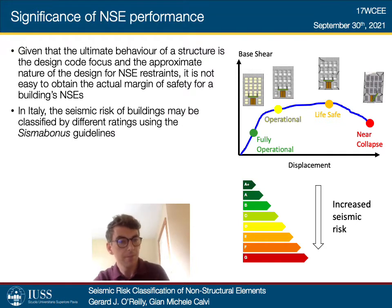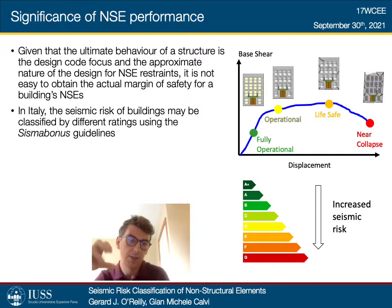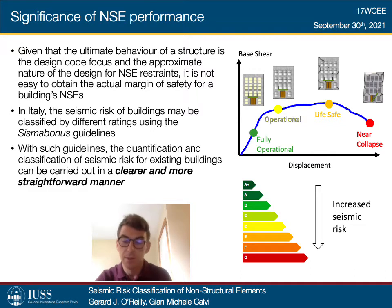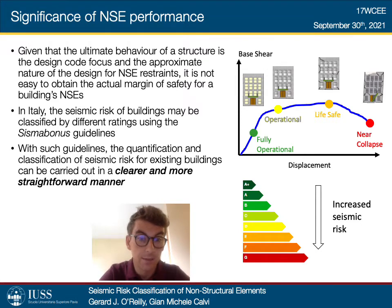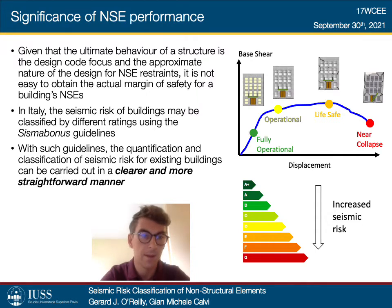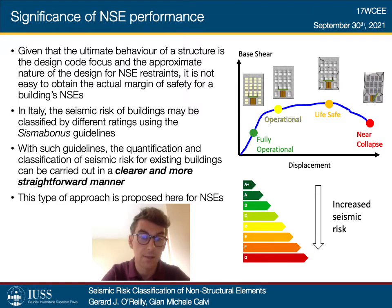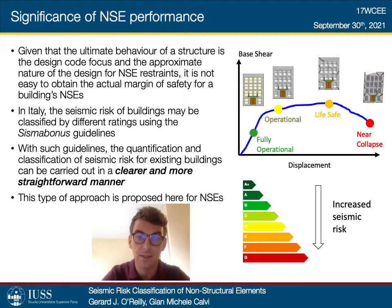In Italy, there is a recent guideline called Sisma Bonus which tries to tackle a similar issue. Basically, they're classifying and ranking different kinds of buildings using a classification scheme. A building can be ranked and tagged with a rating like B, for example, and we know that the building next to it has a ranking of E. The different kinds of risk are easy to quantify and communicate. This is something we're trying to propose here in the case of non-structural elements, using some kind of classification scheme to simplify and communicate risk to people.